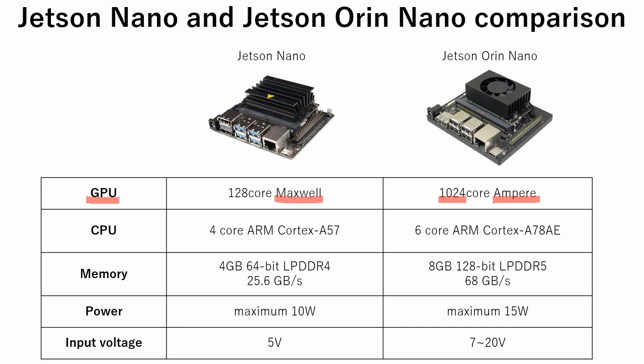Compared to the previous model, Orin Nano can handle some problems dozens of times faster. The number of CPUs is also increased from 4 to 6, delivering nearly 7 times the performance of the Jetson Nano. The memory is doubled in Orin Nano, allowing multiple applications to run at the same time.